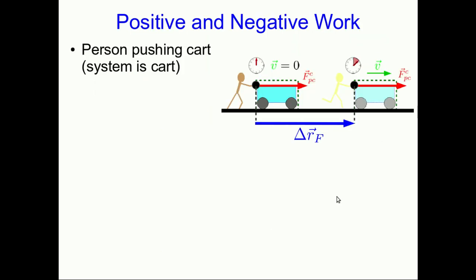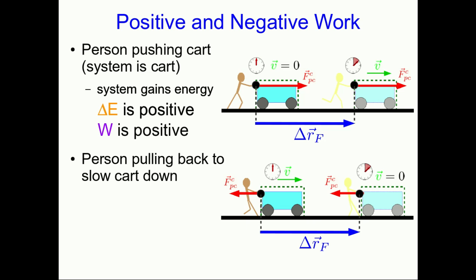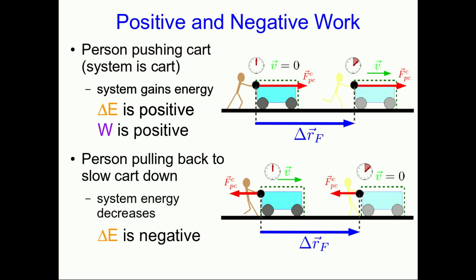Impulse is a vector and so it can't be positive or negative, but work is a scalar and it is allowed to be positive or negative. When the person pushes the cart, the system is gaining energy, so the change of energy is positive and the work is positive. On the other hand, the person could be pulling back on the cart to slow it down and bring it to rest — now the system's energy is decreasing, the change in energy is negative, and so the work is negative.